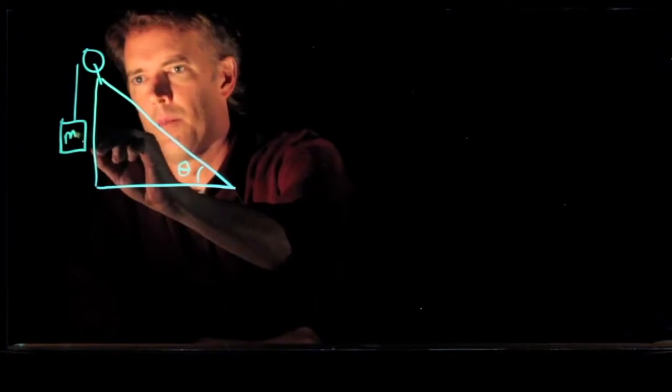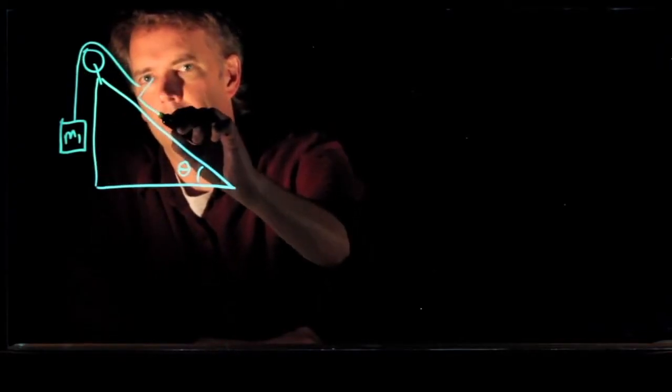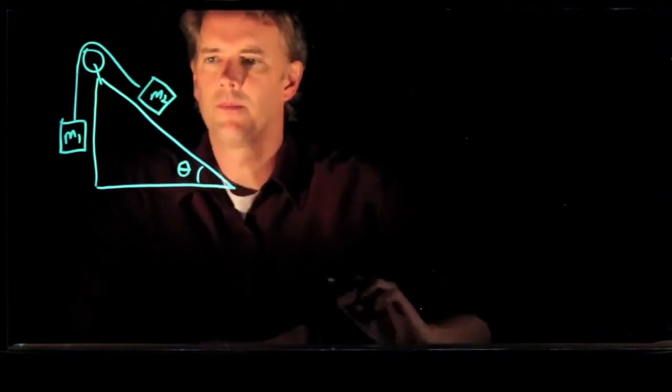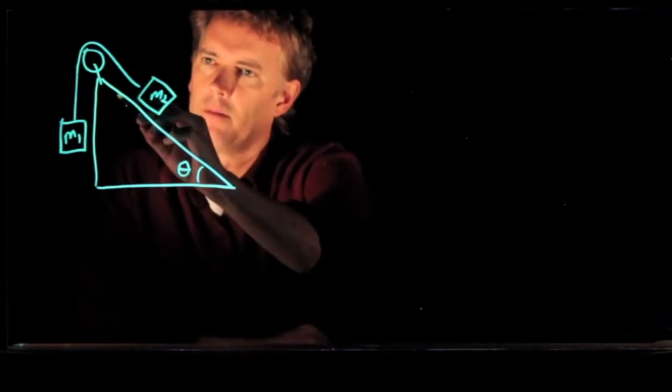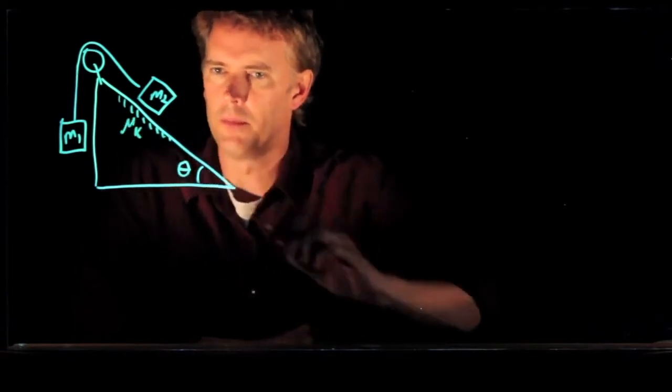and we will hang a mass from this pulley. Call that M1, and we will have the pulley tied to another mass right there, M2. And let's add some friction on the plane with coefficient mu k.